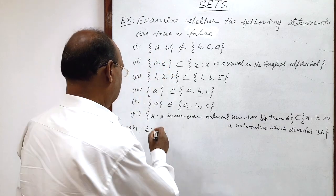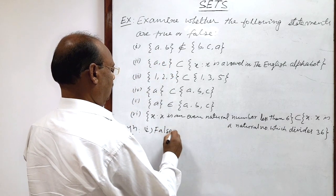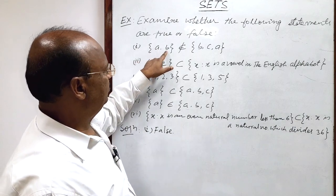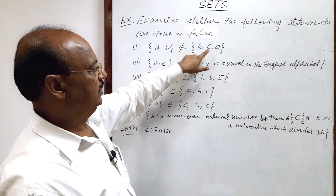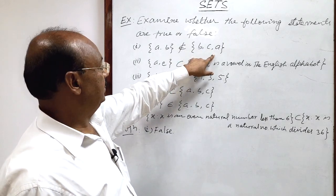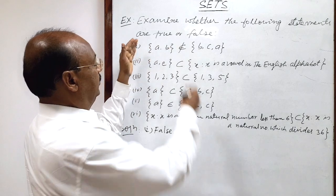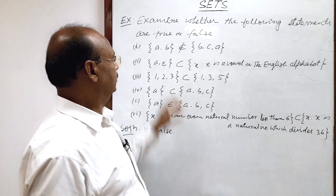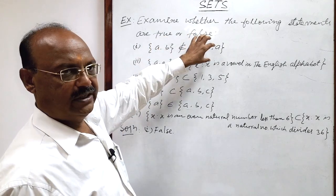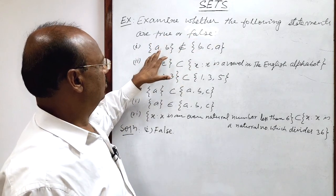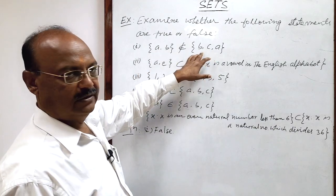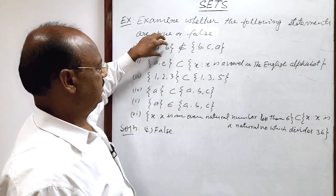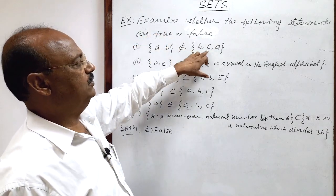No, this is false. Because here elements A and B are belonging to this set, but the statement is asking whether this entire set {A,B} is belonging to this set or not. The entire set is not belonging to this set — only elements A and B are. This set {A,B} is a subset of this set, but the set itself is not a member of this set.